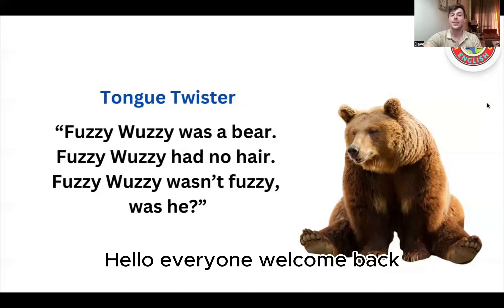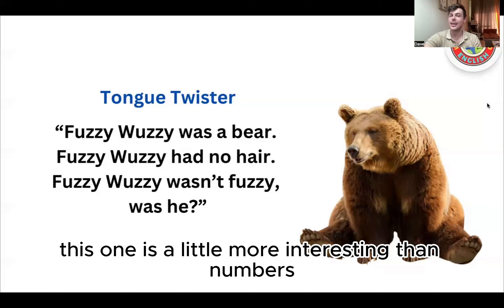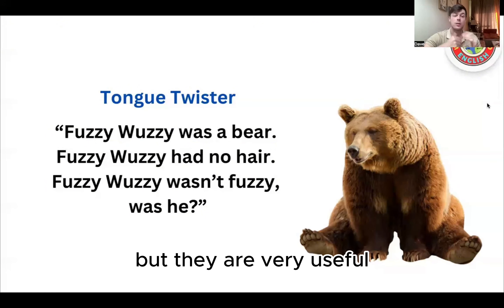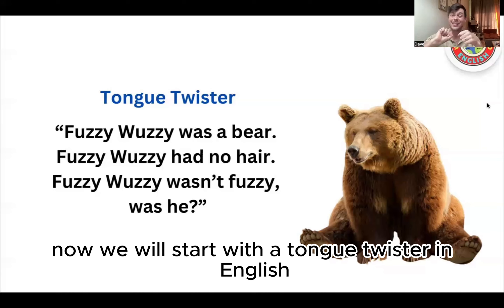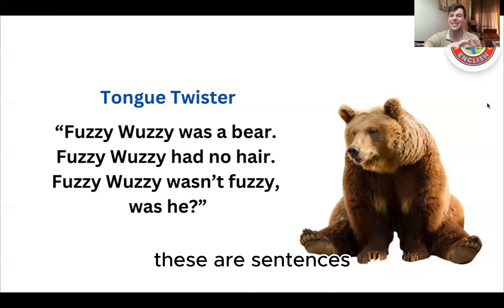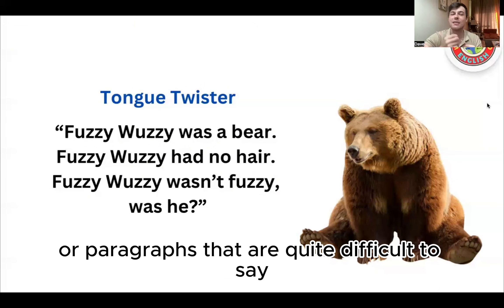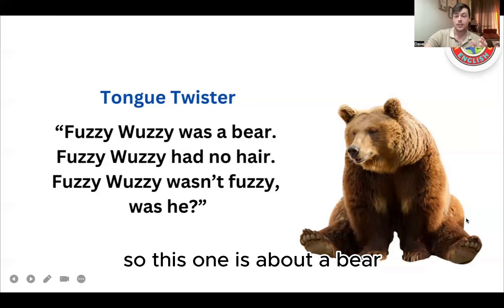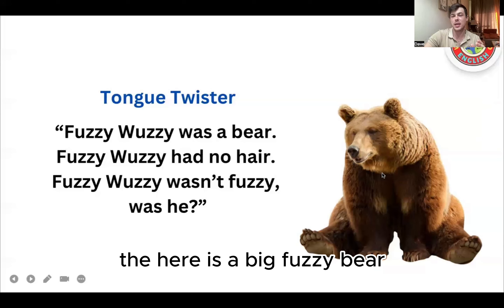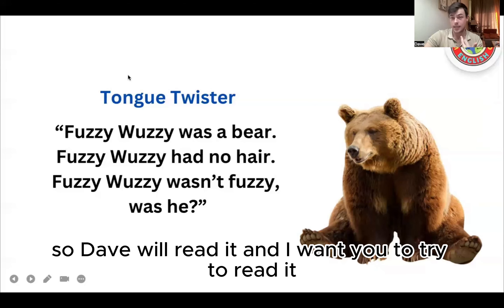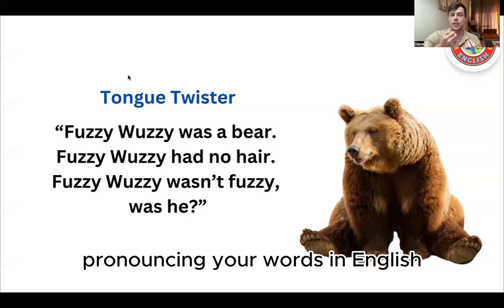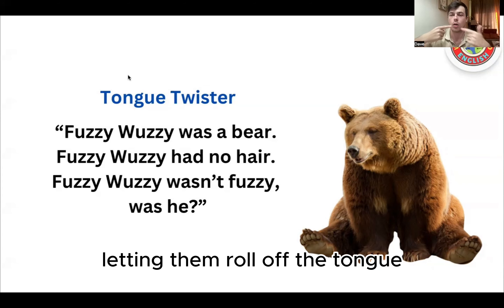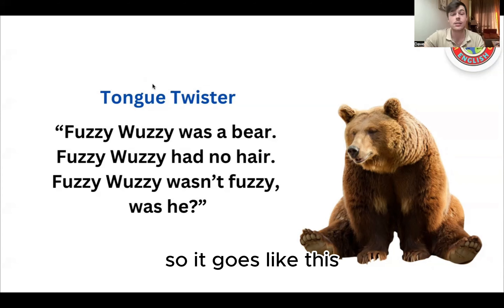Hello everyone, welcome back. This is lesson five. This one is a little more interesting than numbers but they are very useful — and perhaps a little more fun. Now we will start with a tongue twister in English. These are sentences or paragraphs that are quite difficult to say. This one is about a bear — here is a big fuzzy bear. Dave will read it and I want you to try to read it. This will help you with pronouncing your words in English, letting them roll off the tongue.